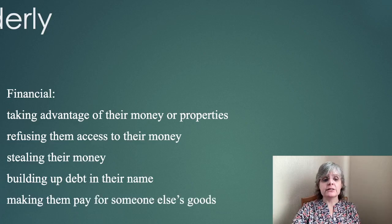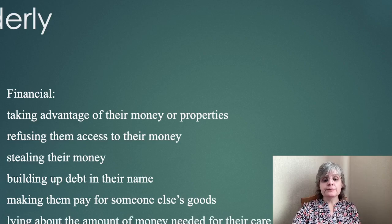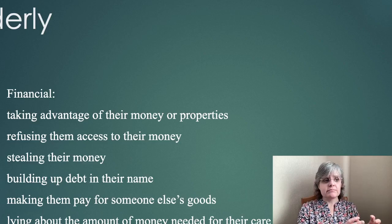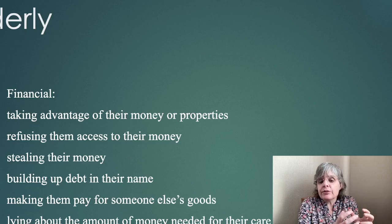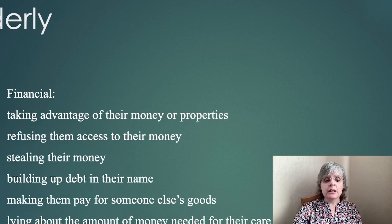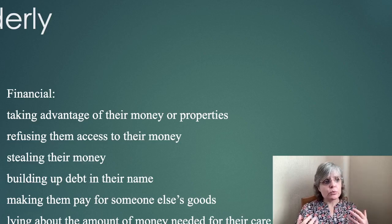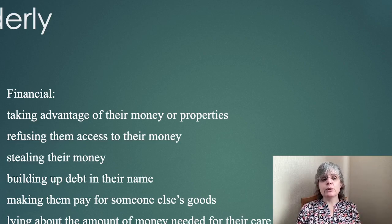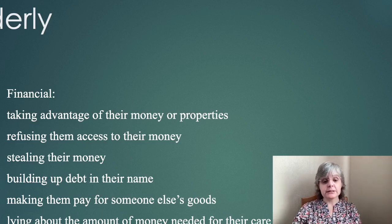Or building up debt, making them pay for someone else's goods, or lying about the amount of money needed for their care. The older person, not being up to date with finances, may find it overwhelming. People do these selfish, horrible things — using their credit cards without permission. Very commonly, they trick them into signing a contract or changing their will. People will build a relationship in order to get them to sign their will, so they get all the money instead of the people who should receive it. It happens a lot.